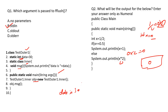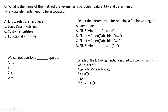The questions are not going to be very difficult — just basic concepts. What is the name of the method that examines a particular data entity and determines what elements need to be associated? The answer is entity relationship diagram, as it helps in achieving that particular task.